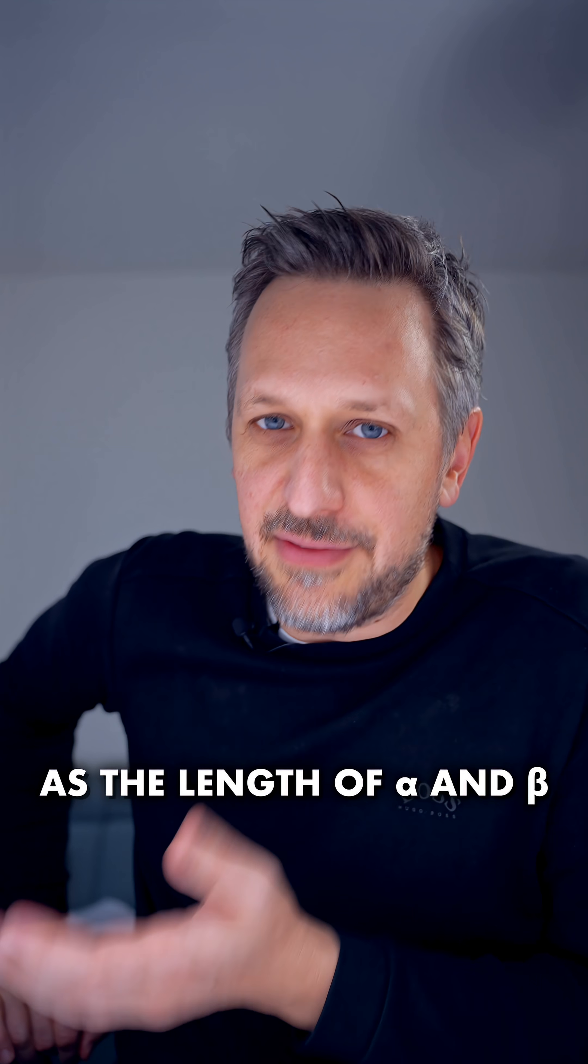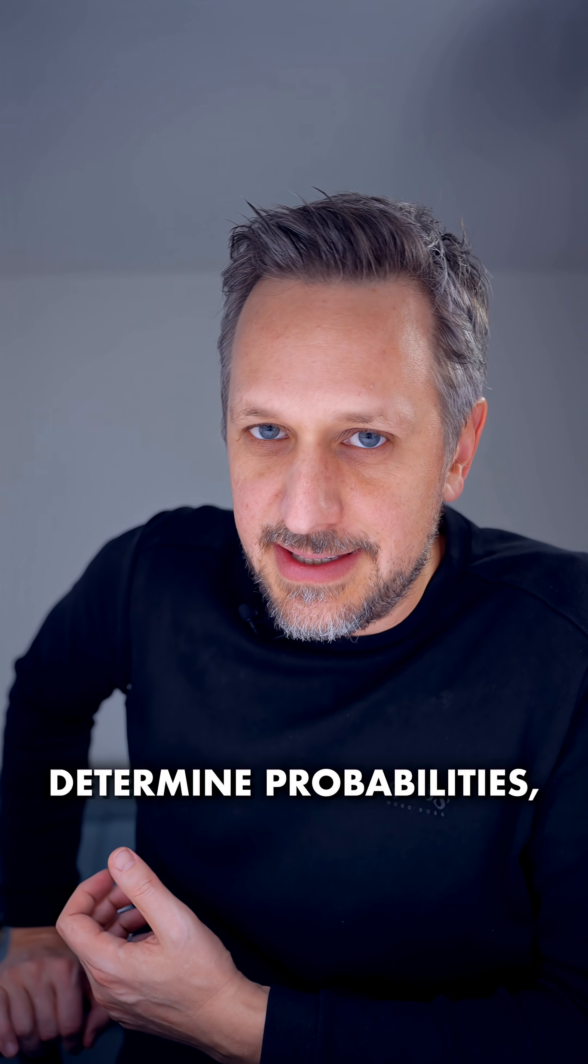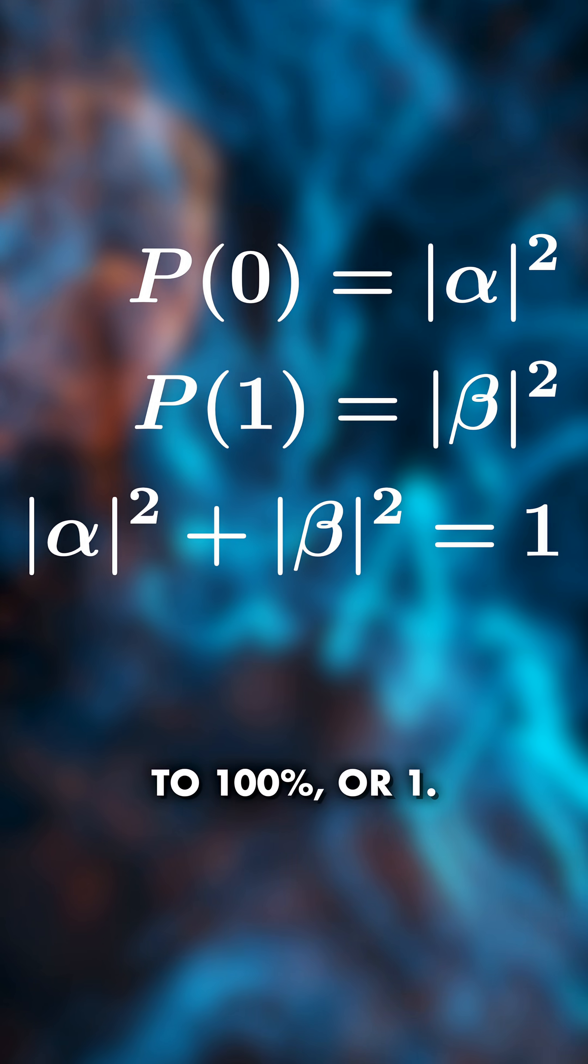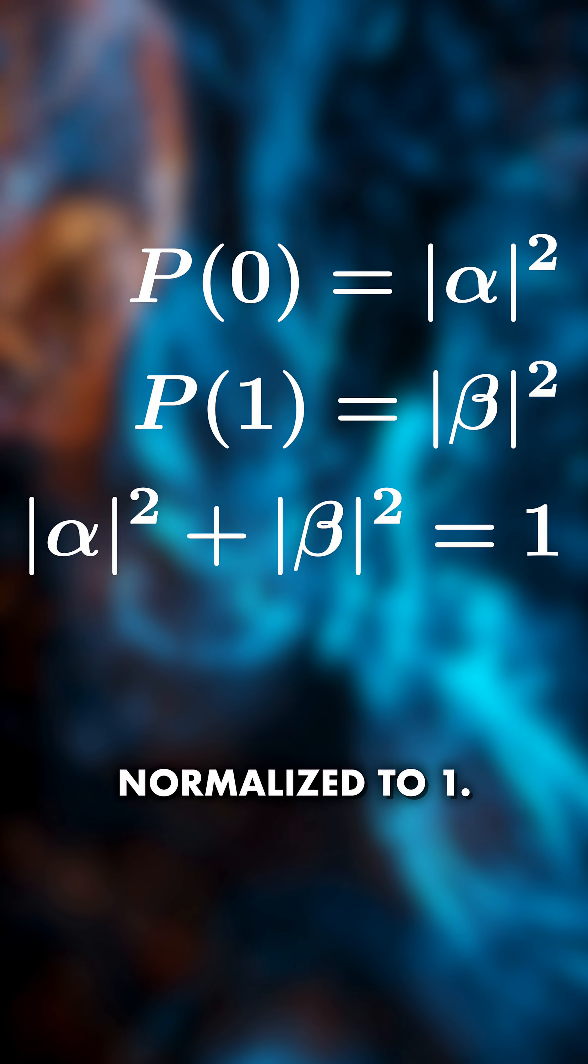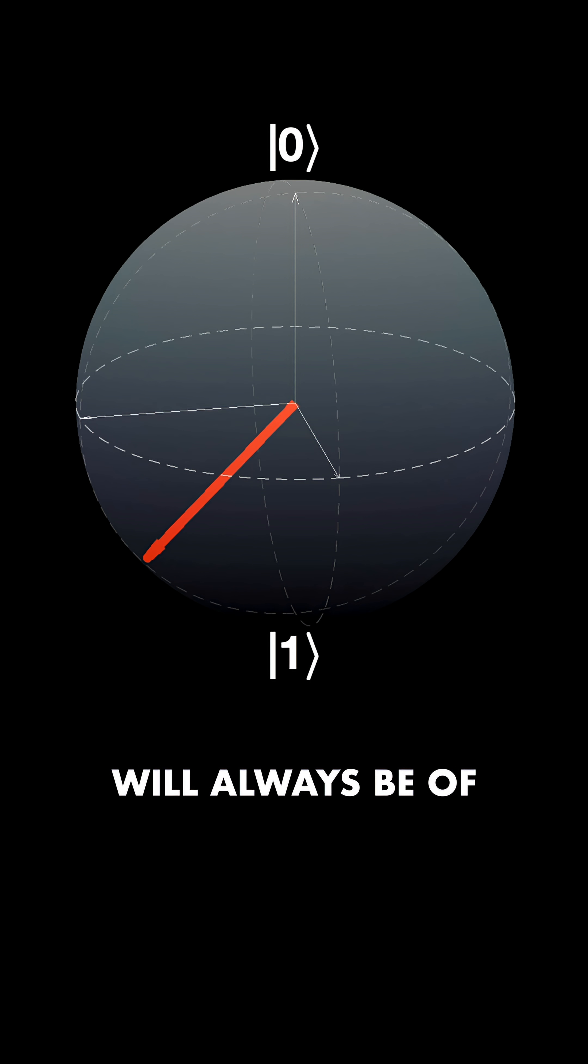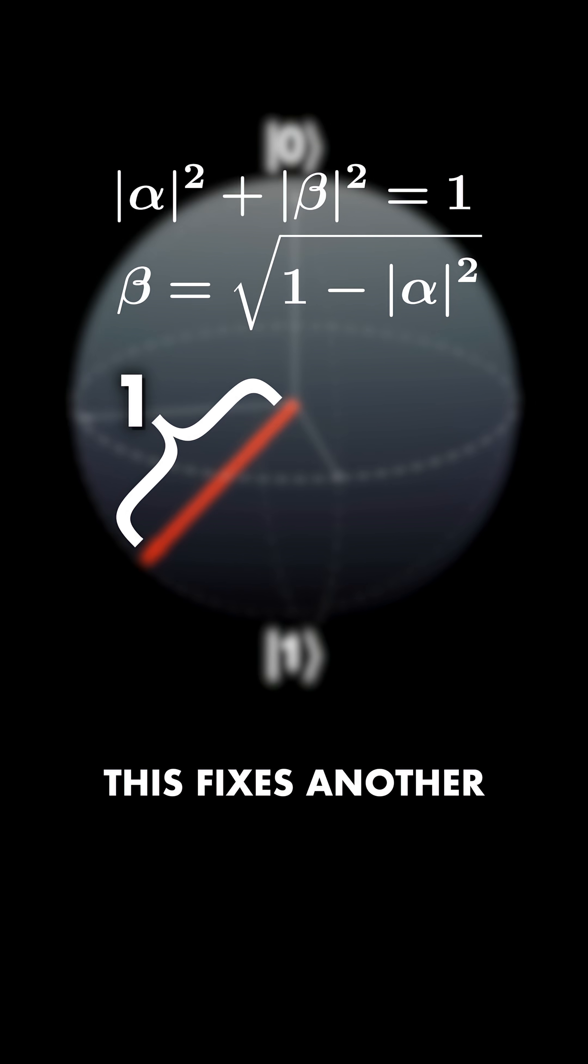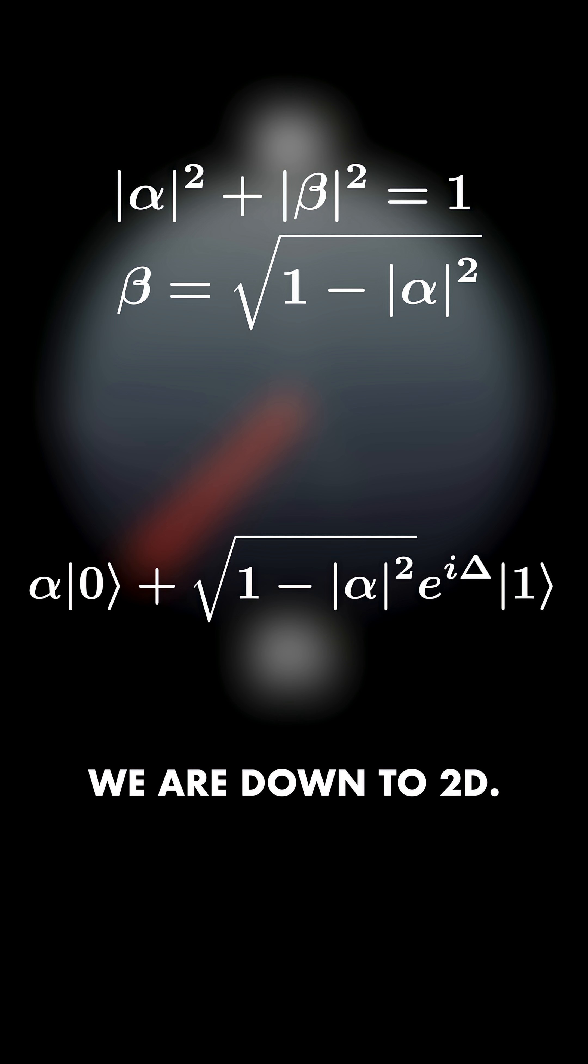As the length of alpha and beta determine probabilities, they must always add up to 100% or one. We say qubits are normalized to one. The direction vector will always be of length one. This fixes another dimension. It means we are down to 2D.